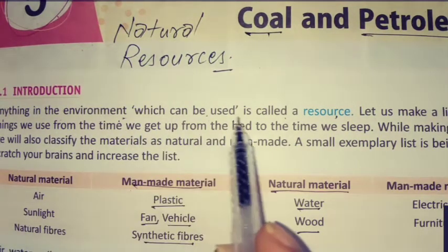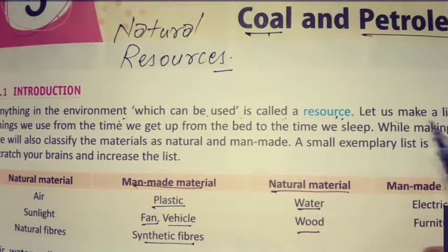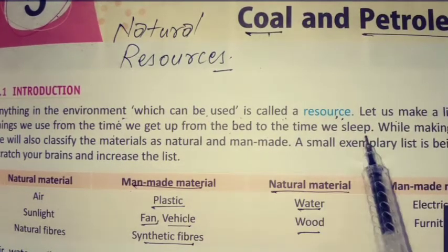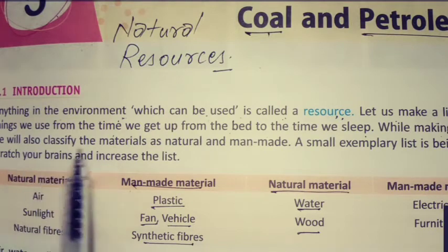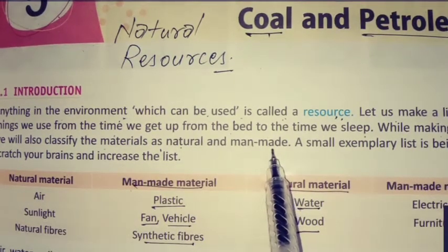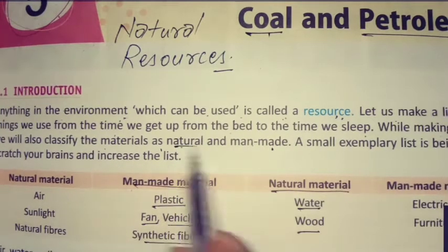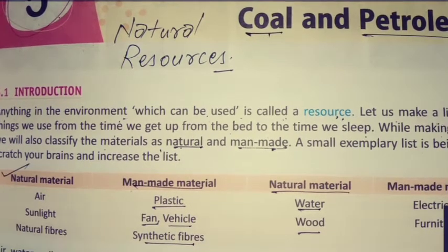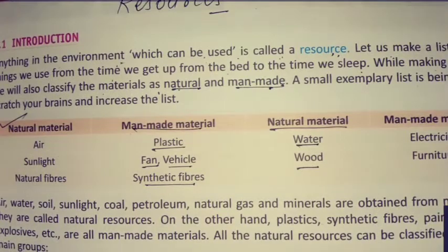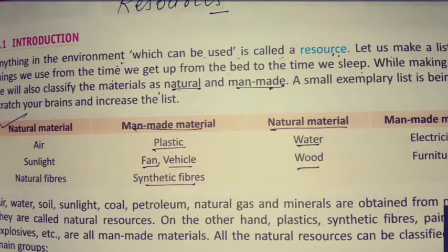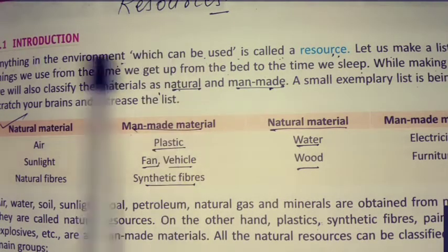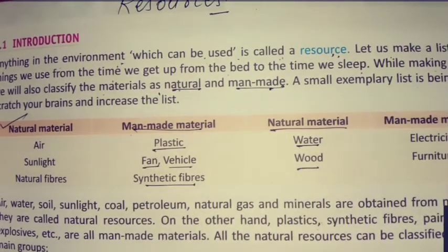Anything in the environment which can be used up is called a resource. Let us make a list of things we use from the time we get up from the bed to the time we sleep, and classify the materials as natural and man-made. A pen is a man-made resource, but food grain or air is a natural resource.